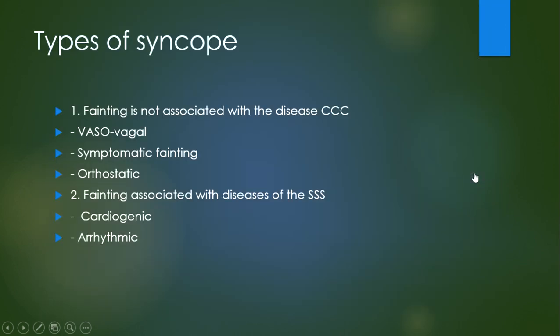We have different types of syncope. First, fainting not associated with circulatory disease: vasovagal reflex, symptomatic faint, and orthostatic. Symptomatic faint means the person may have some internal bleeding they don't know about, and the loss of consciousness was only a symptom of that internal bleeding.